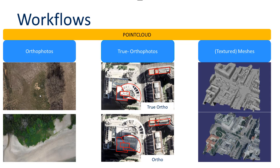These autophotos are generated with a correct terrain model and then stitched together. Through seam lines the autophotos are merged into a seamless mosaic, which is the typical autophoto workflow.